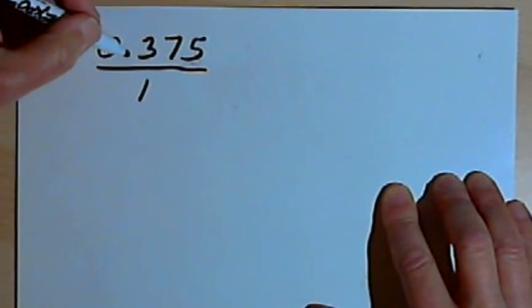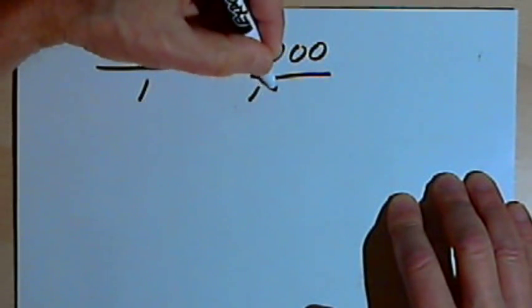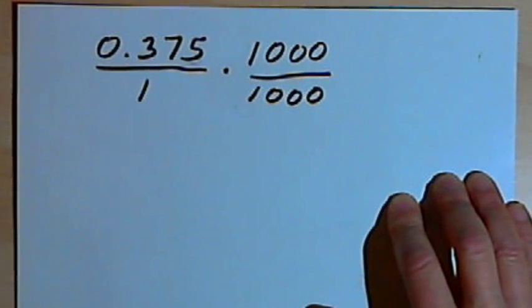Now I don't want to leave it like that with a decimal in the numerator. So what I'm going to do is multiply it by the fraction 1,000 over 1,000. And here's why.